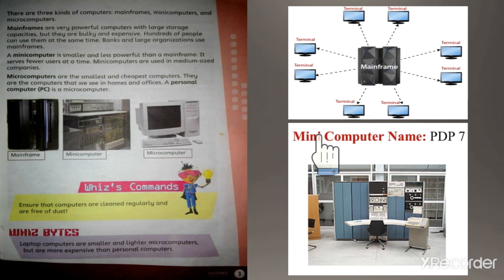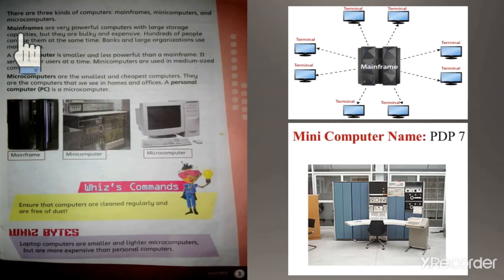Next page is page number 3. On page number 3, there are three kinds of computers: mainframe, mini computer, and micro computer. Dear student, keep in mind that there are more than three types of computers, but here the three kinds described are based on size — size ke according computer ki three kinds hain.